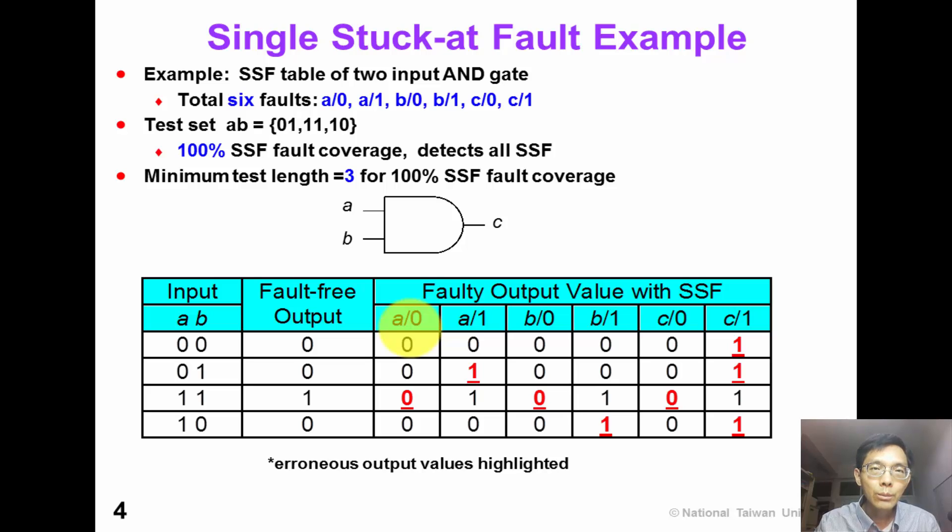Here is an example of single stuck-at fault. For a two input NAND gate, we have totally 6 faults. There are A stuck-at 0, A stuck-at 1, B stuck-at 0, B stuck-at 1, C stuck-at 0, and C stuck-at 1.